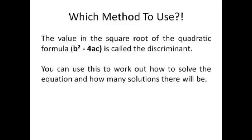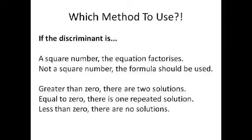Say you're looking at your quadratic equation for a long time and you can't solve it. You can work out which method to use very easily. The quadratic formula will always work but sometimes it's just easier to factorize, especially if you don't have a calculator. The value in the square root of the quadratic formula is called the discriminant and this is b² minus 4ac. You can use this to work out how to solve the equation and how many solutions there will be. So you stick all of your numbers into the discriminant, type it into your calculator. If your discriminant is a square number, the equation will factorize. If it's not a square number, unfortunately the formula has to be used. If your discriminant is greater than zero, there's two solutions. If it's equal to zero, there is one repeated solution and if it's less than zero, there's no solutions so you can just give up.